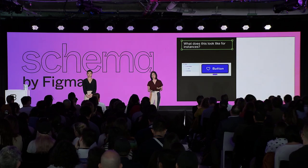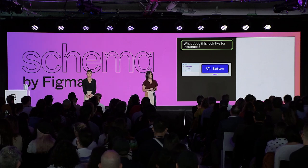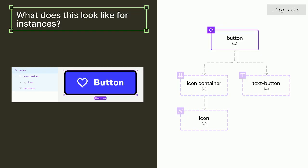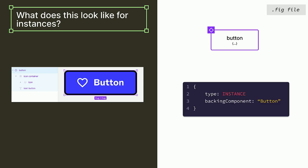How does this differ for instances, and what makes instances so complicated? If we take an example with an instance of a button, you might imagine the .fig file looks similar — but the reality is that we actually don't store any of the children object layers in the file. We can infer all the information about the instance from the component it inherits from. So for an instance layer, we only store its type and the component that backs it — this is a huge memory optimization.